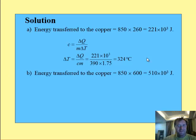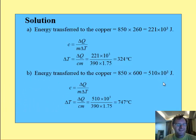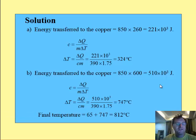Question B: this time the energy transferred is greater because the amount of time is 10 minutes, so that's 600 seconds. So the total energy transferred is 510 times 10 to the 3 joules. In this case the change in temperature is going to be 747 degrees centigrade. Now remember in this case we knew what the initial temperature was, so therefore we can say that the final temperature is going to be 812 degrees centigrade.